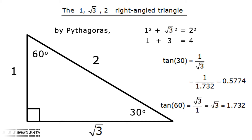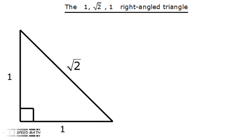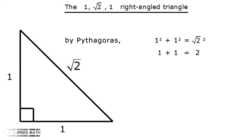Now let's look at the 45 degree angle. These two 45 degree angles reside in a special right-angle triangle with sides 1, 1, and root 2. By Pythagoras: 1 squared plus 1 squared equals root 2 squared, in other words 1 plus 1 equals 2. For the 45 degree angle, this is so simple and easy to remember: tan 45 degrees equals 1. These two triangles — sides 1, 2, root 3 and sides 1, 1, root 2 — are really useful and often crop up in trig work, so learn them.